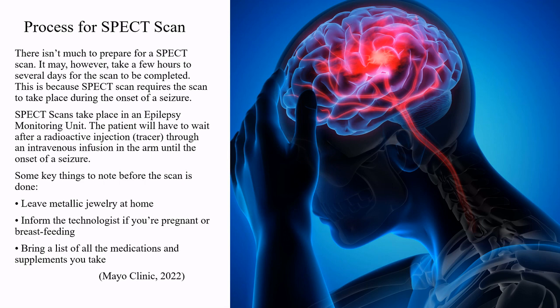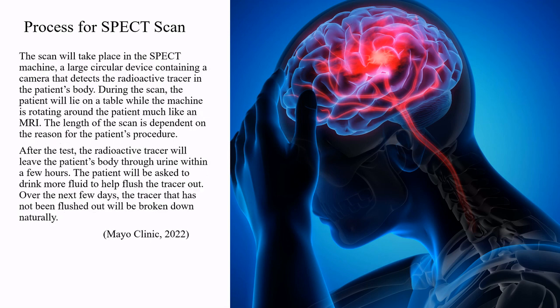Some key things to note before the scan: leave metallic jewelry at home, inform the technologist if you are pregnant or breastfeeding, and bring a list of all medications and supplements you take. The scan takes place in the SPECT machine, a large circular device containing a camera that detects the radioactive tracer in the patient's body. During the scan, the patient lies on a table while the machine rotates around them, much like an MRI. The length of the scan depends on the reason for the procedure.